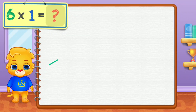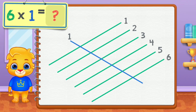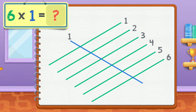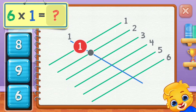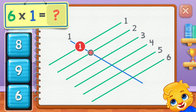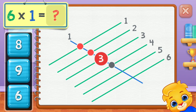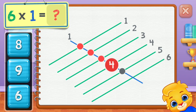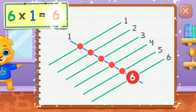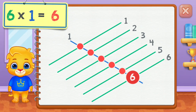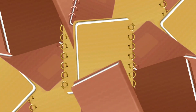Six times one equals... one, two, three, four, five, six. Six times one equals six.